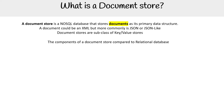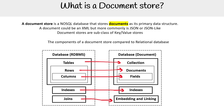The components of a document store compared to a relational database look like this: tables are now collections, rows are documents, columns are fields, indexes are still the same name, and when you do joins, they're called embedding and linking.